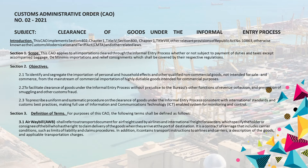2.2 To facilitate clearance of goods under the informal entry process without prejudice to the Bureau's other functions of revenue collection and prevention of smuggling and other customs fraud. 2.3 To prescribe a uniform and systematic procedure on the clearance of goods under the informal entry process consistent with international standards and customs best practices, making full use of information and communications technology (ICT) enabled system for monitoring and control.